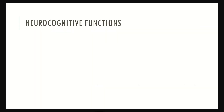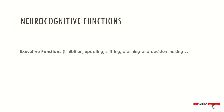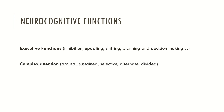Now let's see which functions we are talking about. Executive functions, which encompasses inhibition, updating, shifting, planning, decision making, cognitive flexibility and so forth. Complex attention, which encompasses arousal, sustained, selective, alternate and divided attention. As you are seeing here, the neurocognitive process of attention is subdivided in several sub-processes.